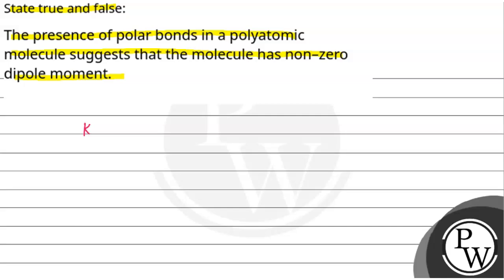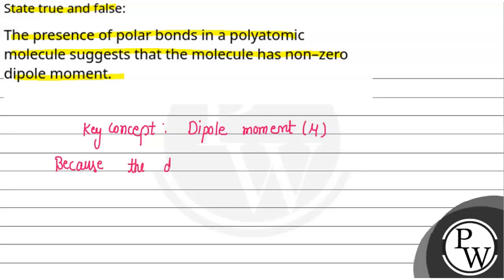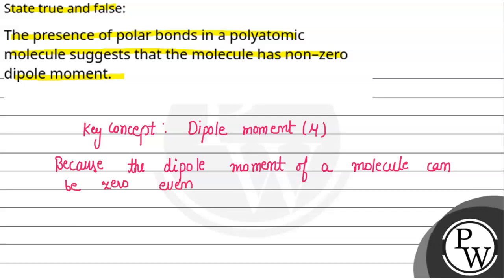The key concept for this question is dipole moment, denoted by the symbol mu. It is not necessary that if a polyatomic molecule has polar bonds, it will have a non-zero dipole moment. Because the dipole moment of a molecule can be zero even if it has polar bonds.